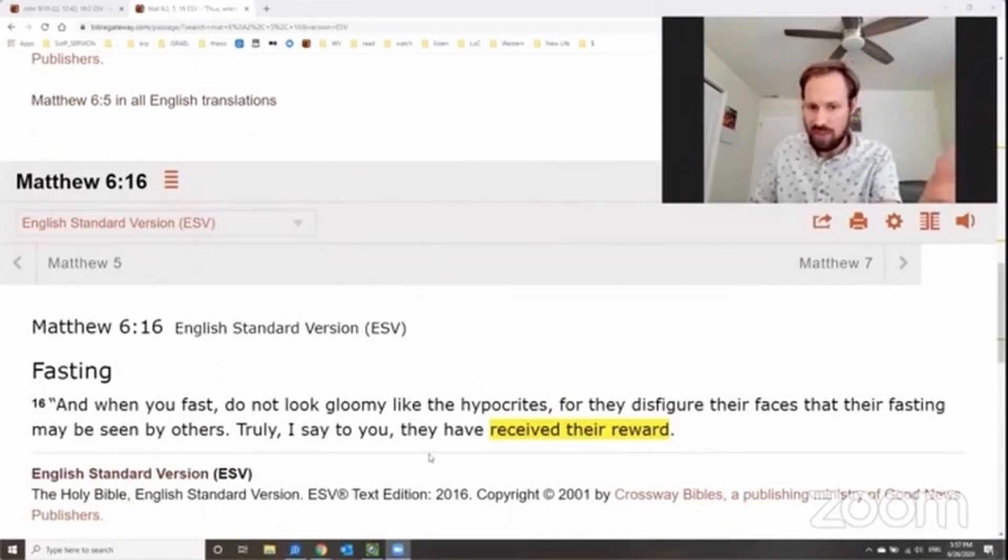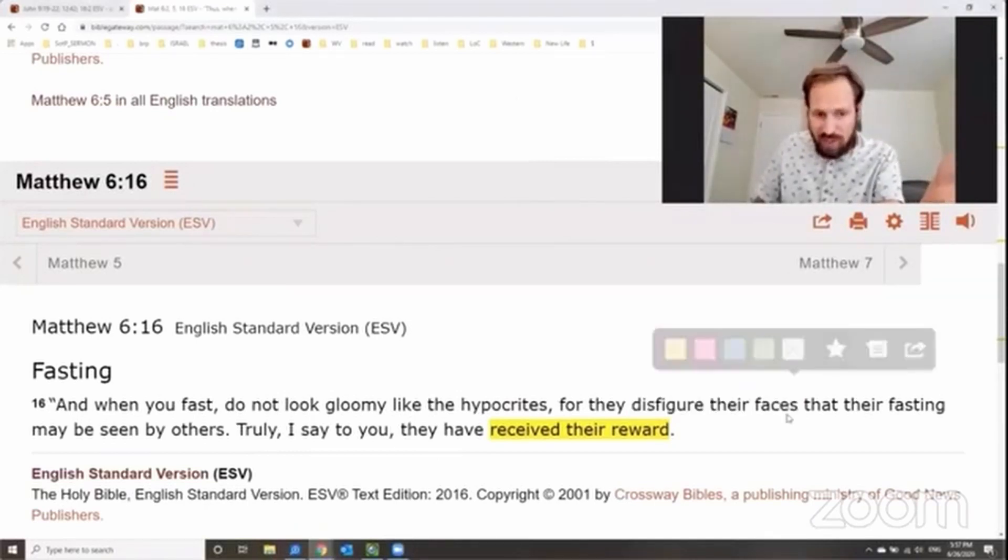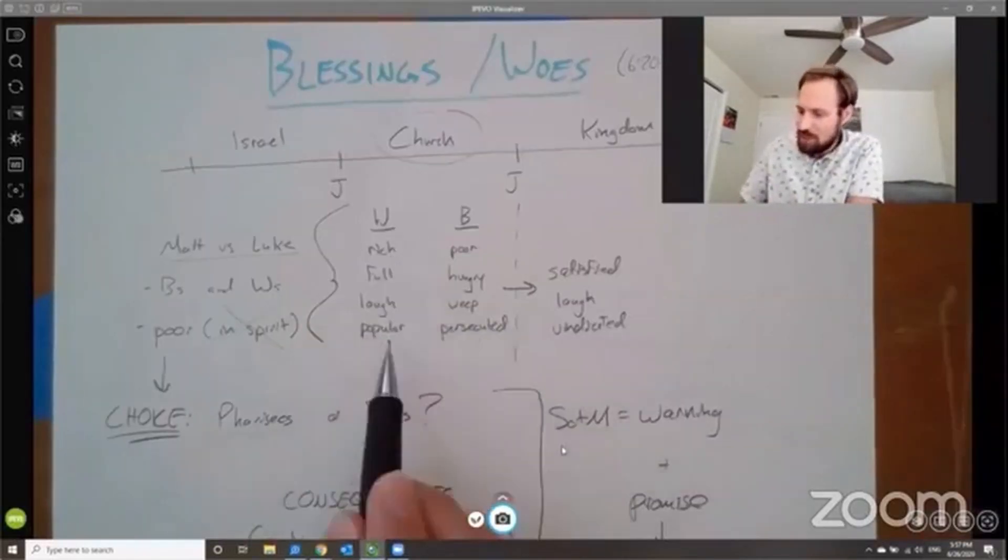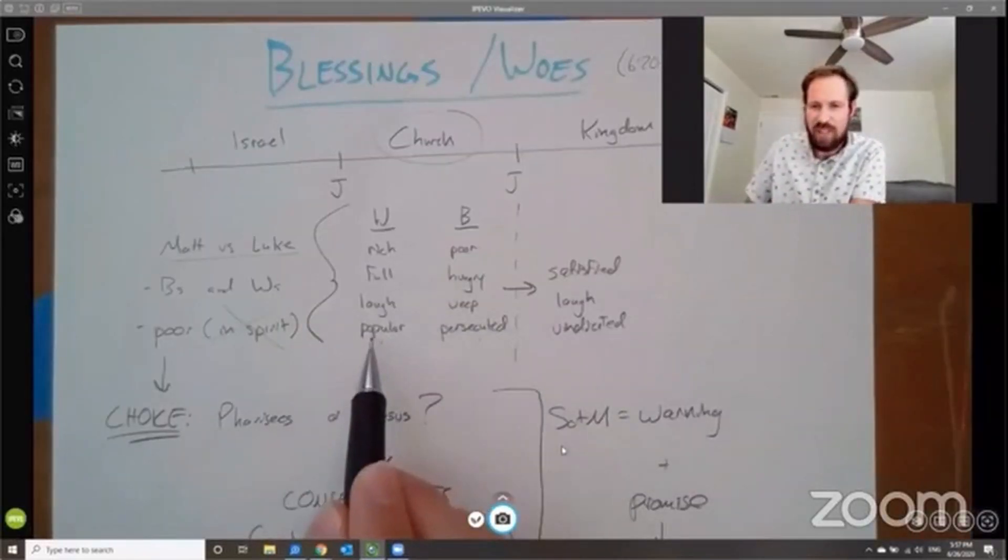Same is true in this last example. Take a look at this with fasting. How did the Pharisees fast? What's their fasting like? Well, they disfigure their faces for what purpose? That their fasting may be seen by others. That's the reward they're seeking. They're seeking a reward here in this world. The, the, the popularity, the, the praise, the glory that comes from man.